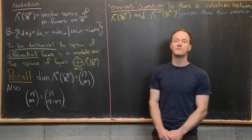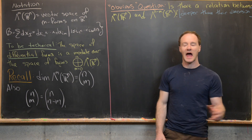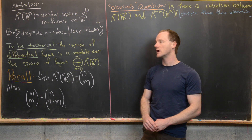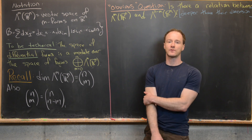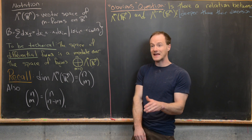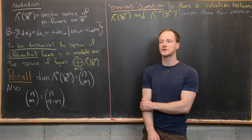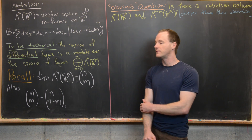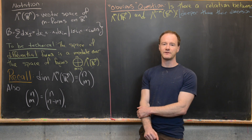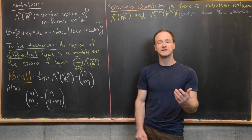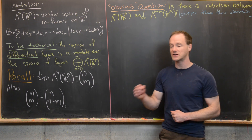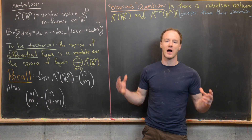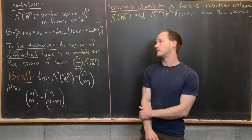We've spent some time looking at m-forms, how they act on vectors from the tangent space T_p R^N. We've also looked at differential m-forms, how to integrate these differential m-forms over parametrized m-spaces in R^N, and the exterior derivative of differential m-forms. Today we want to take a step back, introduce some new notation, and look at an interesting property among the space of all forms.